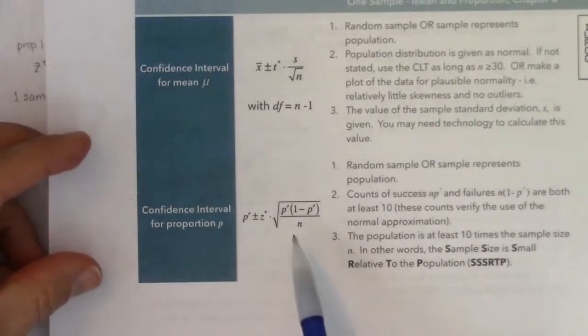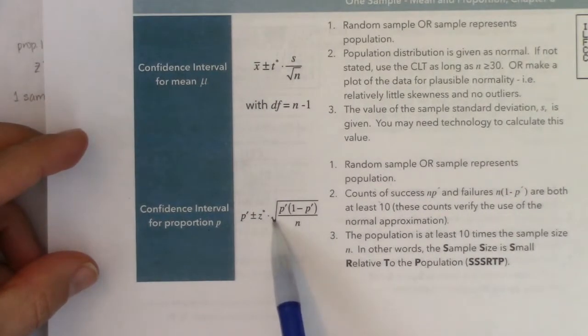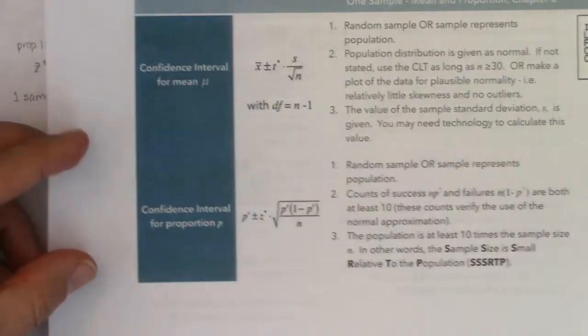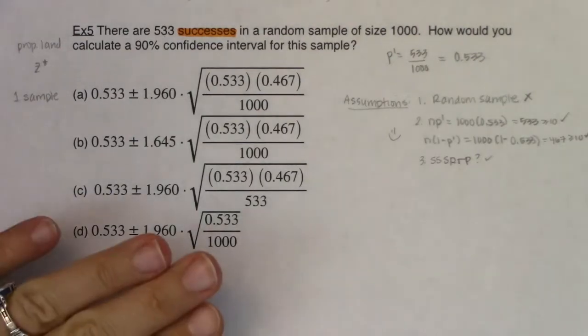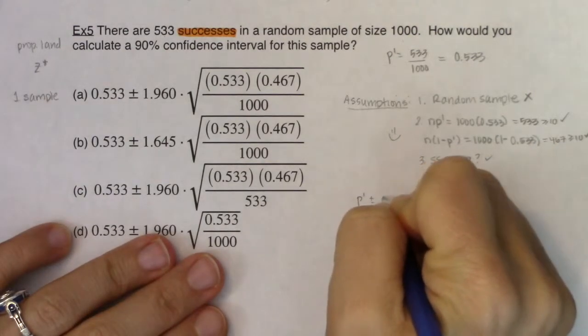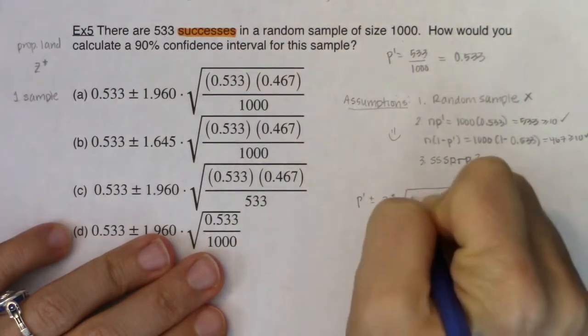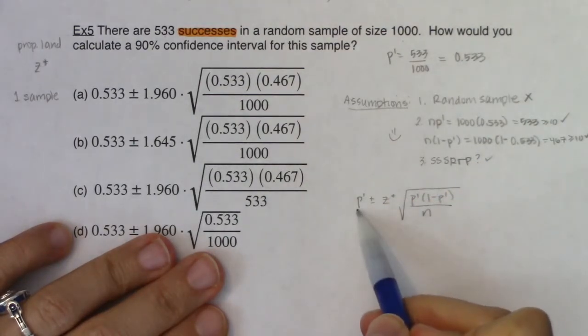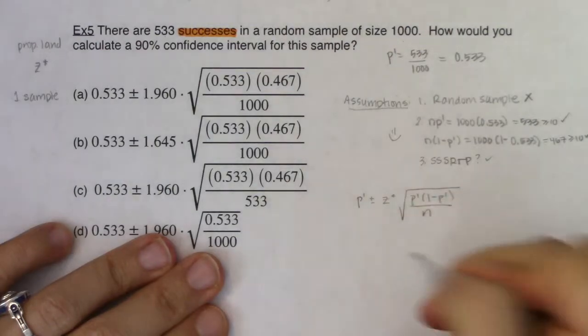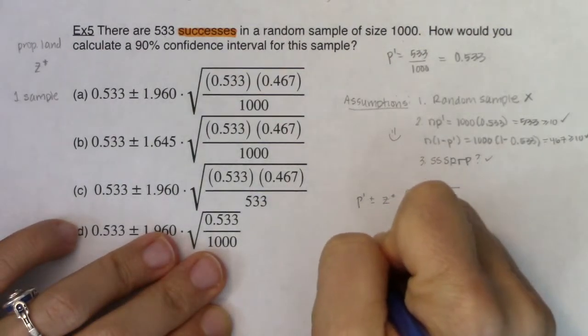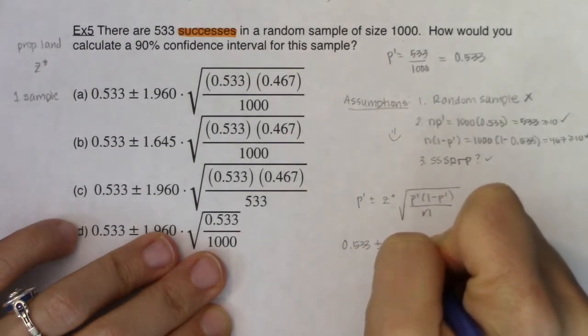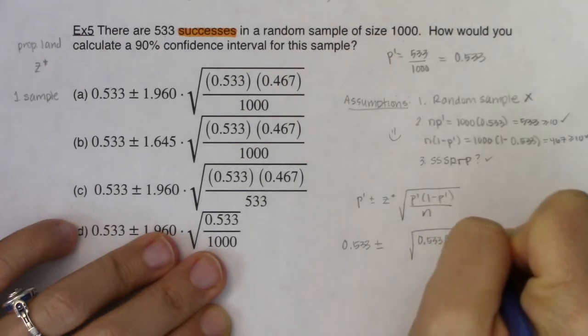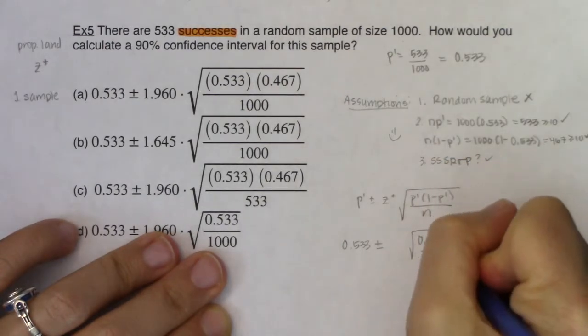So let's go get the formula and see what we would plug in. Our formula is p prime plus or minus z star square root p prime(1 minus p prime) over n. So we got this margin of error that always has a critical value times a standard error. So I got p prime plus or minus z star square root p prime(1 minus p prime) all over n. We know for our p prime, we're going to plug in 0.533. I've got 0.533 plus or minus some number times the square root of 0.533(1 minus 0.533) over n, and my n was a thousand here.